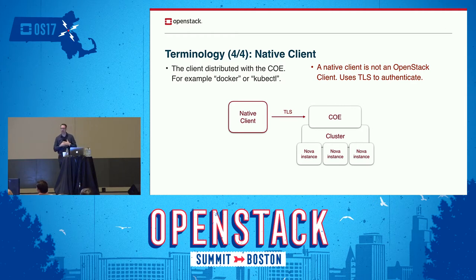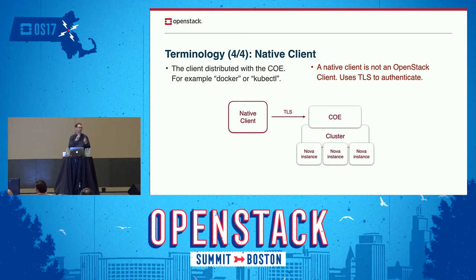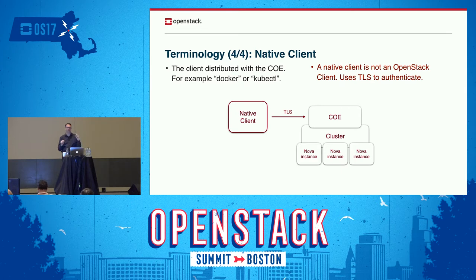The last piece of terminology is native client. When I say native client, I mean the tool that is native to the COE — not an OpenStack tool, but whatever the upstream open source container management tool is. So if you are creating Magnum clusters that are Kubernetes clusters, your native client is kubectl. If you are deploying Docker Swarm clusters, then your native client is Docker. Magnum is designed so that end users interact with the native client rather than with OpenStack tools, so you can have OpenStack users who knew nothing about your OpenStack cloud at all and just interact directly with the container orchestration environment.